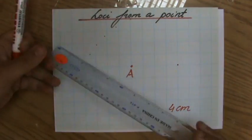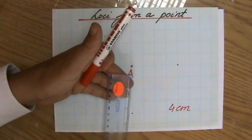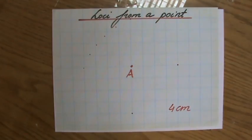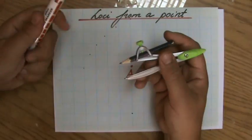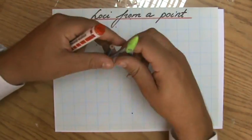So do I use my ruler to find the loci of the points four centimeters away from A? No, I don't. I'm going to use my compass. Very good. I'm going to take my compass and open it.